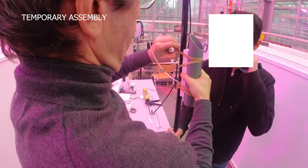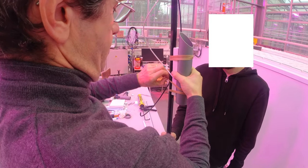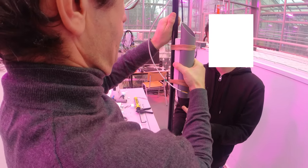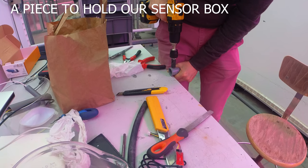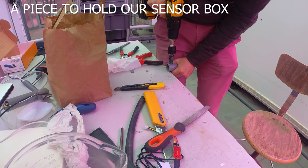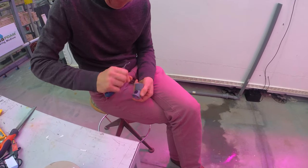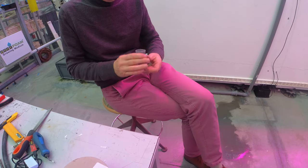In temporary assembly, the electronic box is temporary. Fixed with elastic bands or a collar, it can change position along your stick. A plastic support to fix our sensor box is attached to the mast.